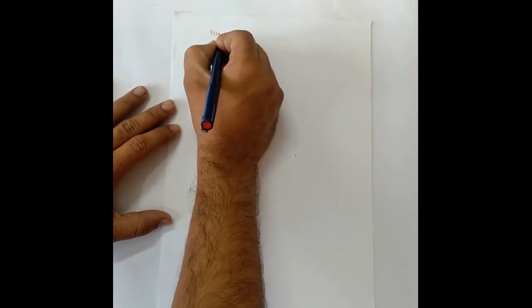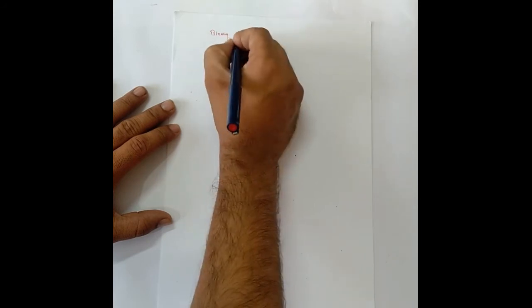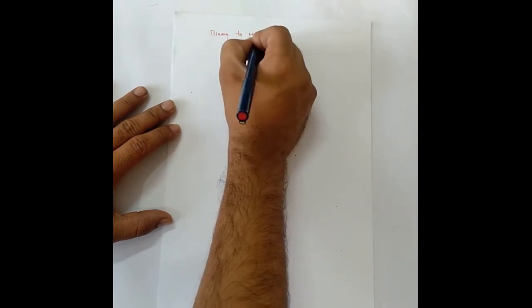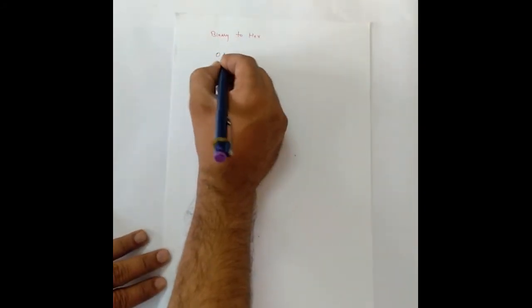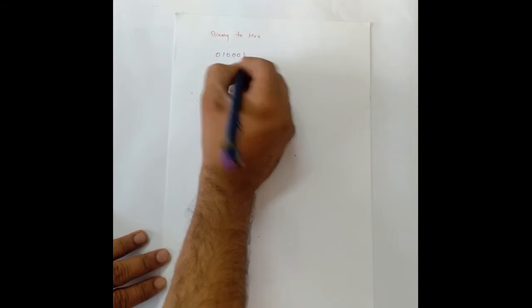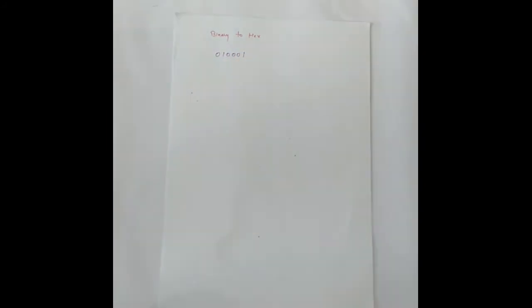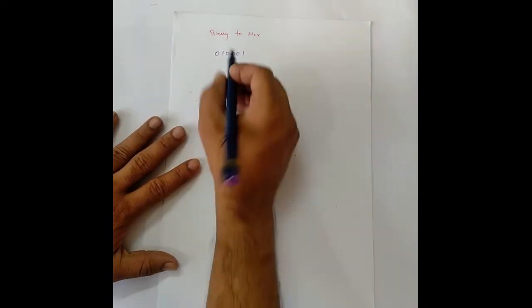Similarly, to convert binary to hexadecimal, we have binary to hexadecimal. So, binary to hexadecimal, we will follow the reverse process. Let's say we have 0 1 0 0 0 1. So, what I told you was, 1 hexadecimal place is equal to 4 binary places.